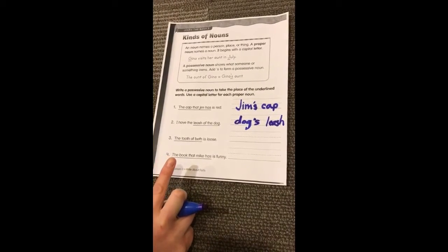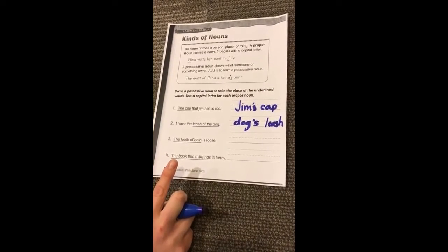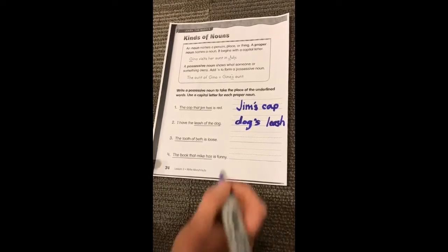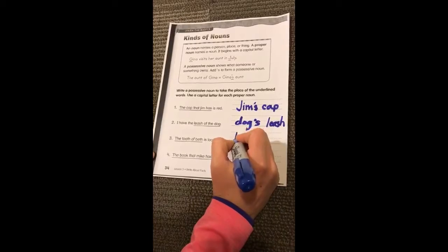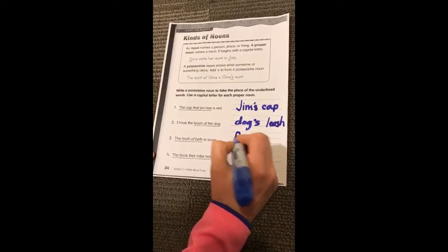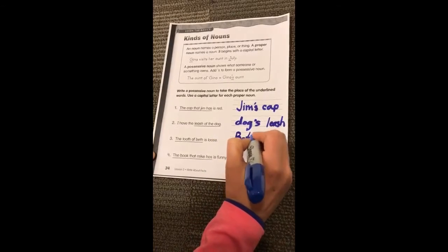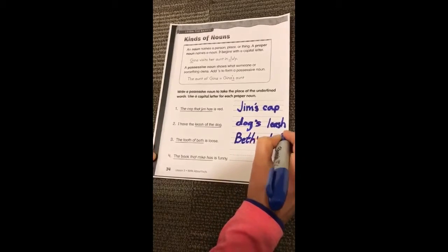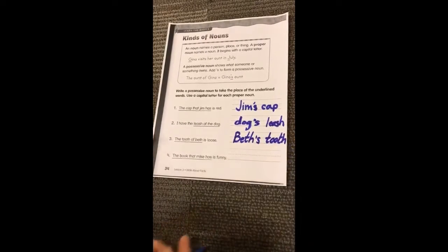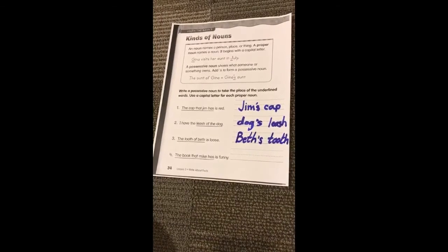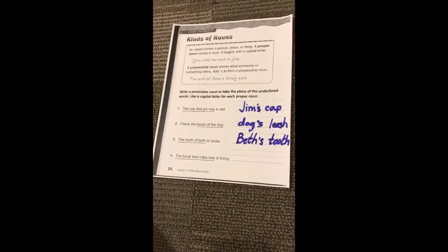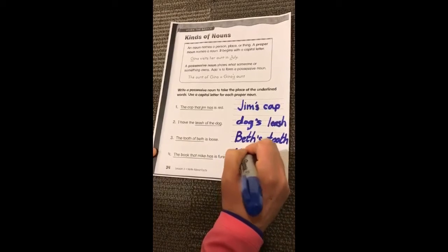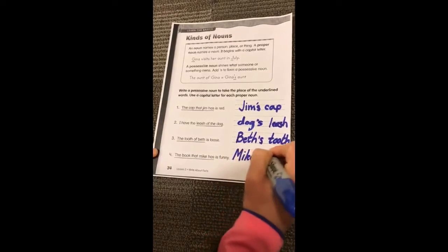Next we have: the tooth of Beth is loose. We're thinking about whose tooth is loose — it is Beth's tooth. So I'll write Beth with a capital B: Beth's tooth. And: the book that Mike has is funny. Whose book is it? It's Mike's book. So we'll write Mike with a capital M: Mike's book.